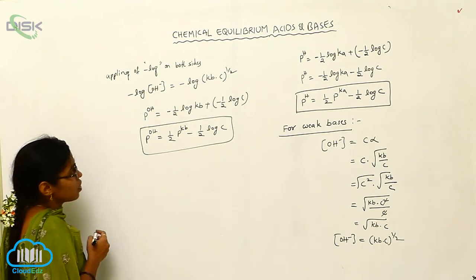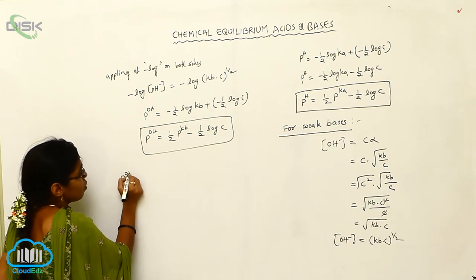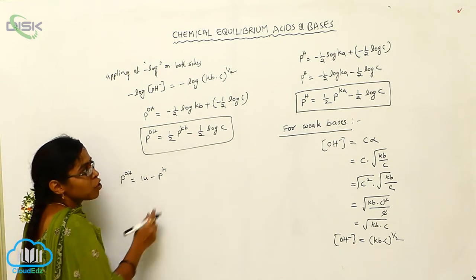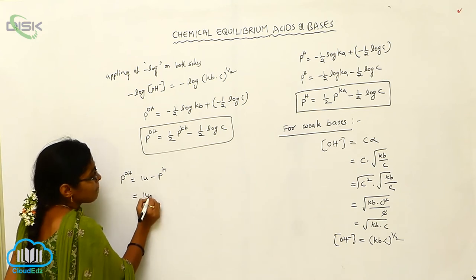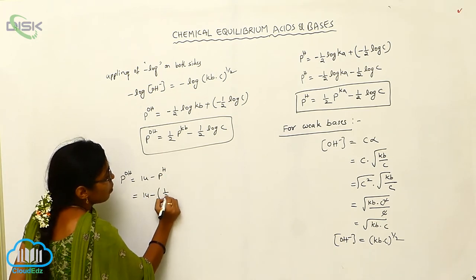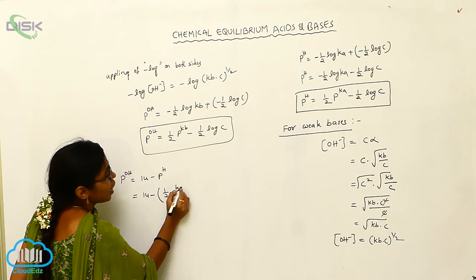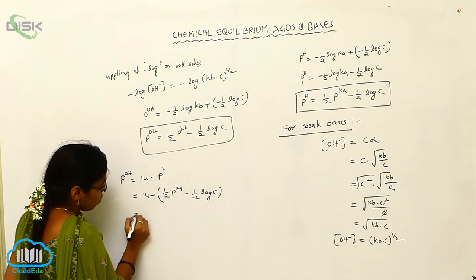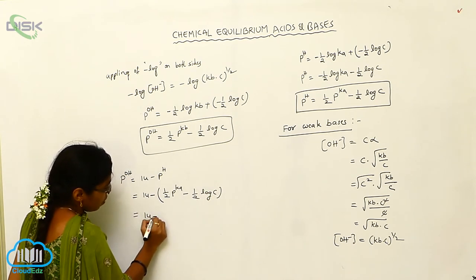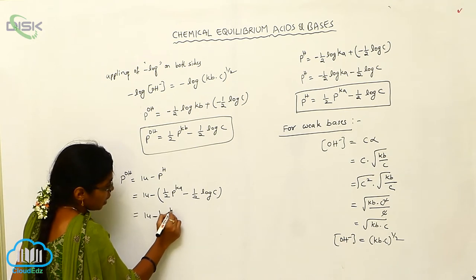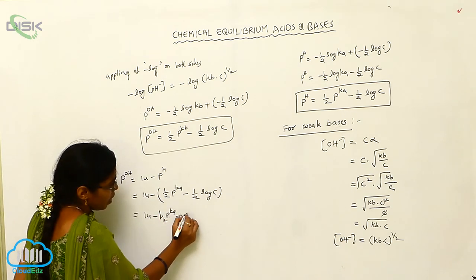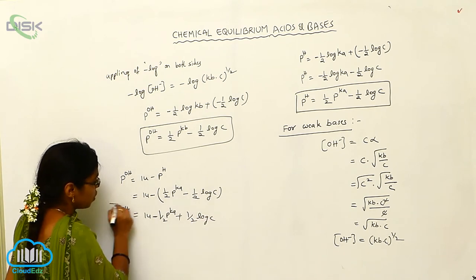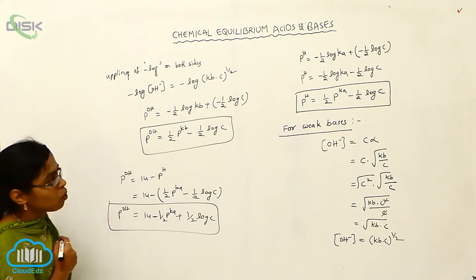We can also write for the pOH: pOH is equal to 14 minus pH. So what is the pH value here? It is 14 minus one-half pKa minus one-half log C. From this we can write 14 minus one-half pKa, plus one-half log C. This is also one more equation for the calculation of pOH.